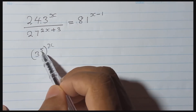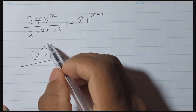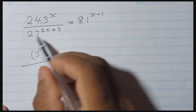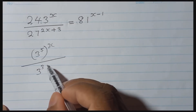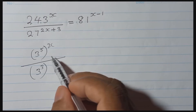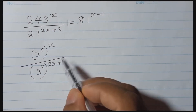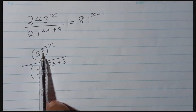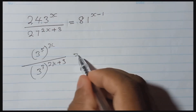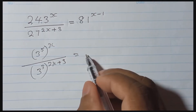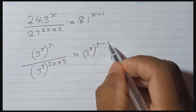So 243 I wrote as 3 to the power 5, and that index was already there. Then 27 also I can write as 3 to the power 3 — 27 means 3 to the power 3 — and here we write the index the same way. Then 81 also I can write as 3 to the power 4, and here will be x minus 1.